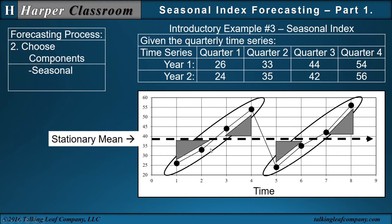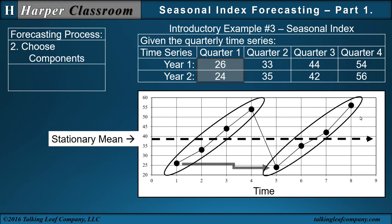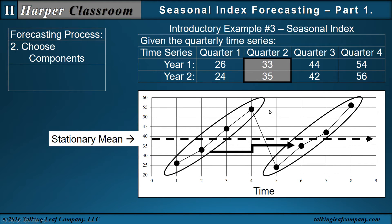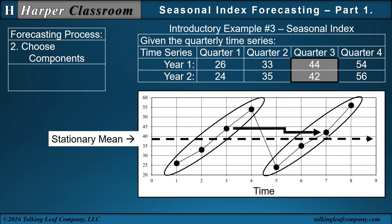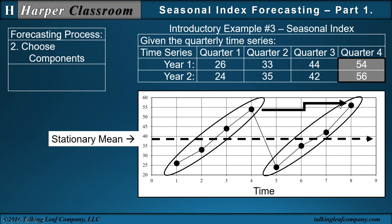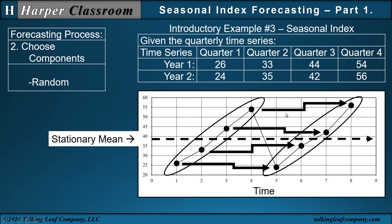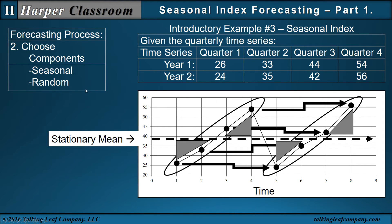If this pattern repeats the next year, I would expect all four numbers to be the same for the next year — but they're not. For example, the first quarter of the second year decreases. The second quarter increases from 33 to 35. The third quarter decreases, and the fourth quarter increases. So between the years there is variability, but that variability is patternless — that's referred to as a random component. The variability within a year due to a pattern that repeats every year is a seasonal component; the variability between years is a random component.